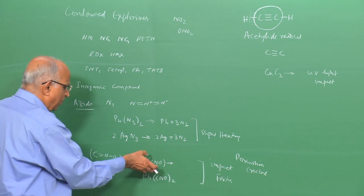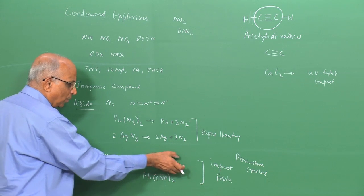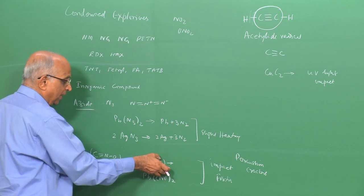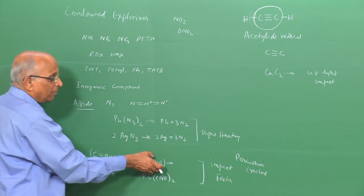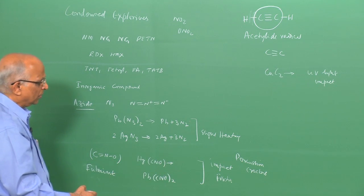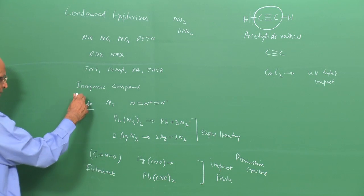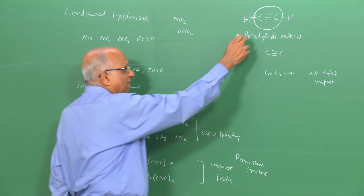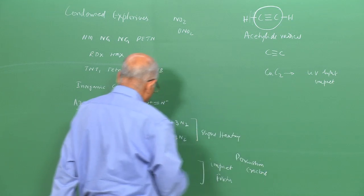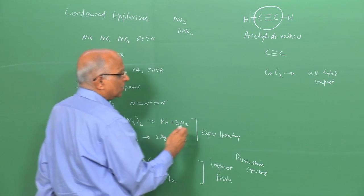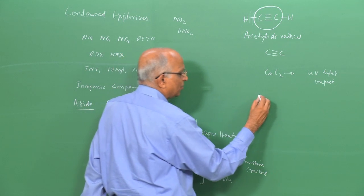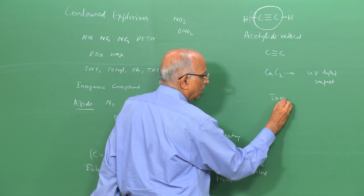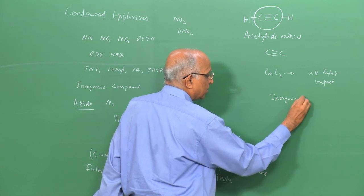Even accumulating silver fulminate causes it to decompose - the very accumulation makes it decompose. Therefore we have radicals like the azide radical, the fulminate radical, and the acetylite radical in the presence of certain metals. These form compounds known as inorganic explosives.